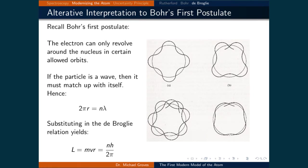Let's discuss what this means for the Bohr model of the atom. Recall Bohr's first postulate: the electron can only revolve around the nucleus in certain allowed orbits. If the particle is a wave, then it must match up with itself. Hence, 2 pi r must equal n lambda, meaning the circumference of the orbit must equal an integer multiple of the wavelength.